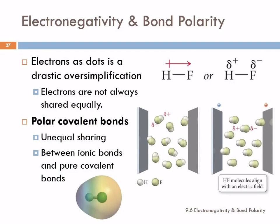Polar covalent bonds are sort of intermediate between an ionic bond, which involves a complete transfer of electrons — that would be like fluorine's family adopting the son from hydrogen; he's theirs now — and a purely covalent bond, which is shared between equals where the electrons are equally distributed. With a polar covalent bond, those electrons still visit hydrogen's house occasionally, but they spend most of their time over at fluorine's. That would be the two houses having the same attractiveness for the little boys — their time is split equally.